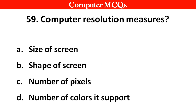Next question: Computer resolution measures — Options A. Size of screen, B. Shape of screen, C. Number of pixels, D. Number of colors it supports. Right answer is option C: Number of pixels.